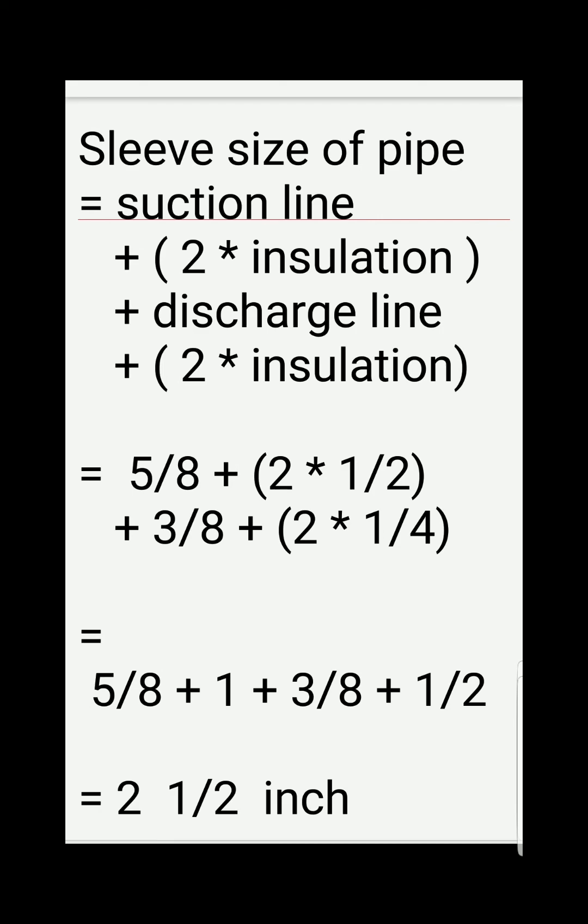Going back to the solution, so now we have 5/8 suction line plus 2 times 1/2 inch suction line insulation, plus 3/8 discharge line, plus 2 times 1/4 inch insulation of discharge line. So we add all those numbers and we find 2 and 1/2 inch in total. So that is the minimum size of the sleeve pipe.